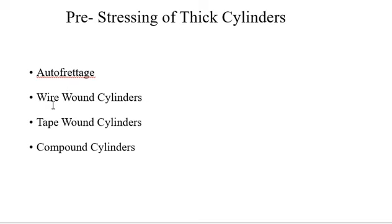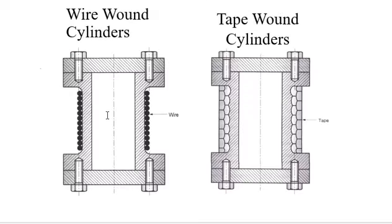Another method is the wire wound cylinder. As you can see in the first picture, the wire is wound around the cylinder. In a wire wound cylinder, a steel wire is wound under tension around a cylinder of about 6 to 12 mm thickness, and it induces initial compressive stress in the cylinder. It is a very easy method to increase the capacity of the cylinder.